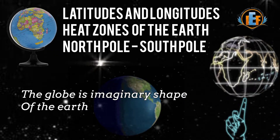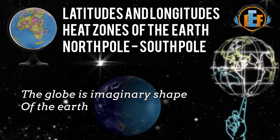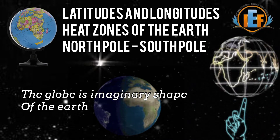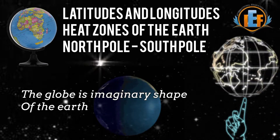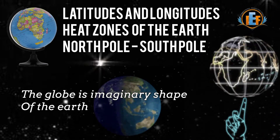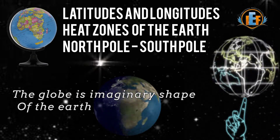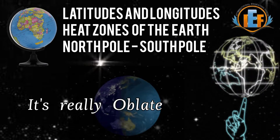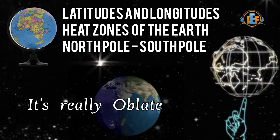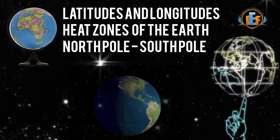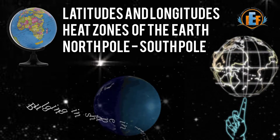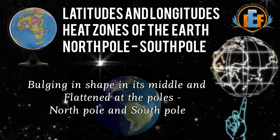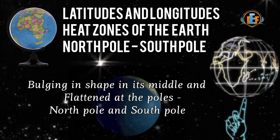The globe is an imaginary shape of the earth. The globe is rounded like a sphere, but it's really oblate or bulging in shape in its middle and flattened at the poles — the north pole and south pole.